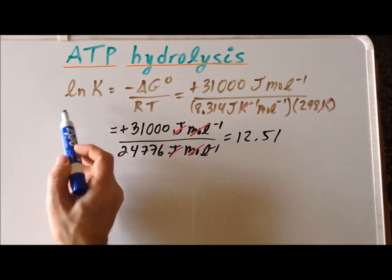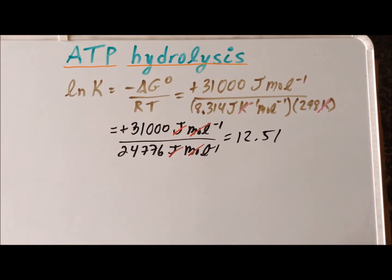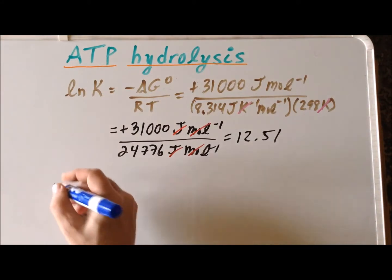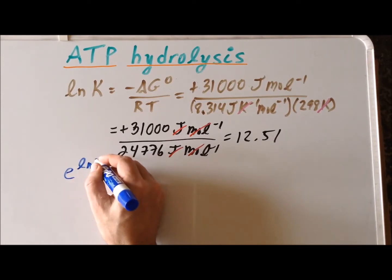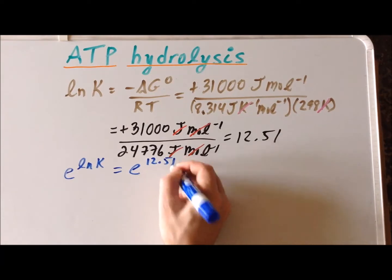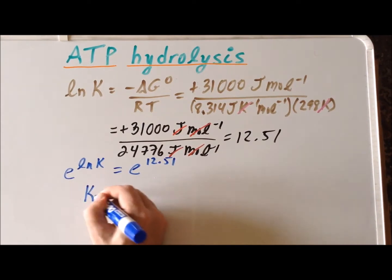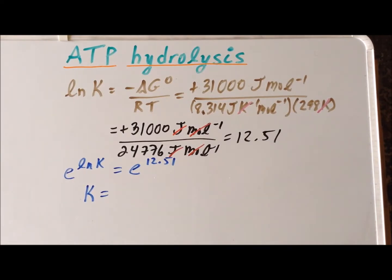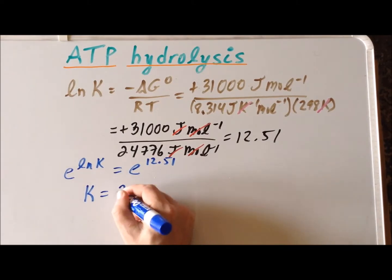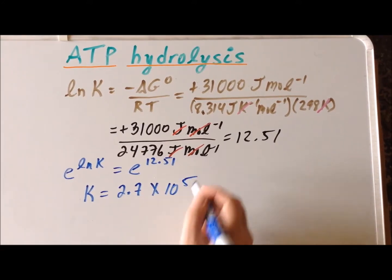Raising each side as a power of e, we get e to the natural log of K equals e to the 12.51. Since e and the natural log cancel, the equilibrium constant equals e to the 12.51, which gives us a value of 2.7 times 10 to the 5.